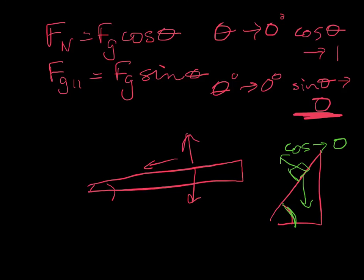If you were standing on a steep surface, you would start to slide down the hill because the sine of the angle approaches one — you're working a lot with gravity. So as you get steeper and steeper, the parallel component gets bigger. As you get flatter and flatter, your normal force is going to be bigger.